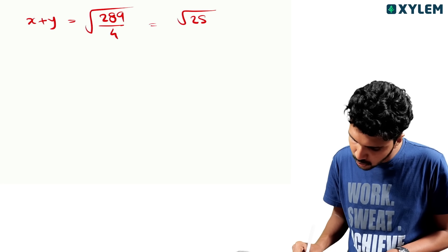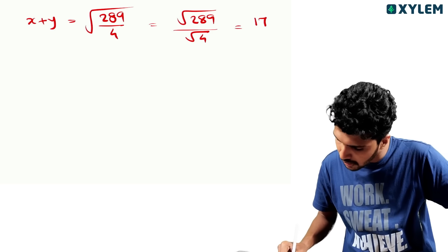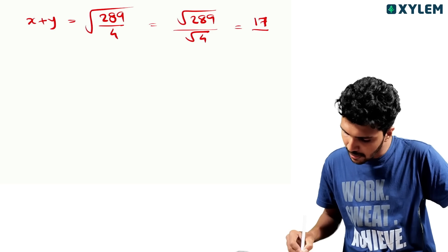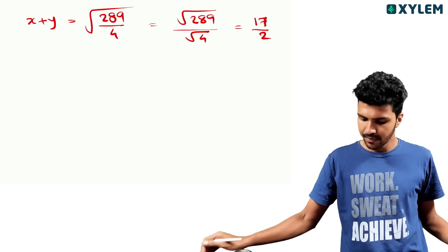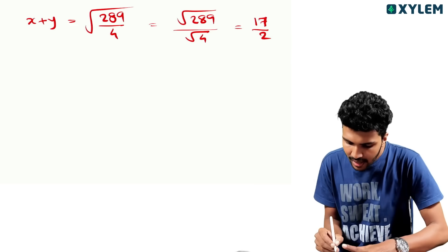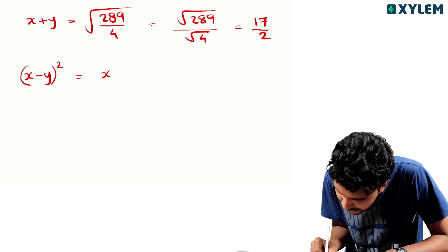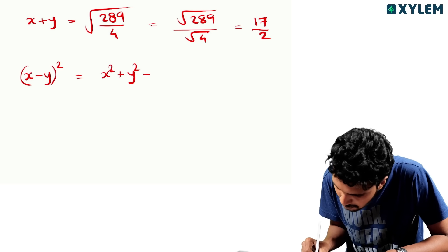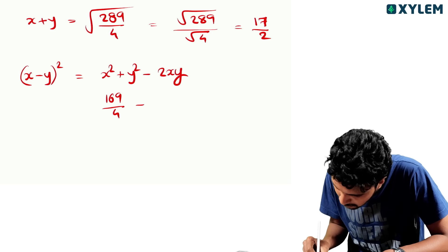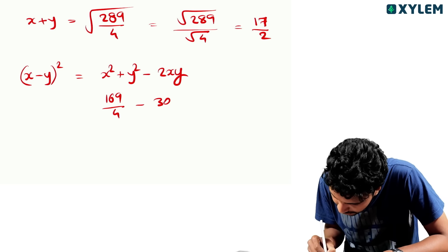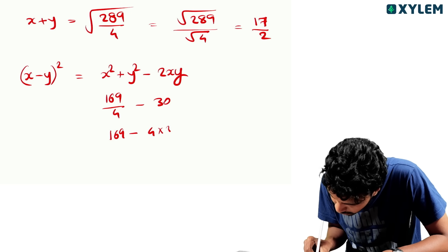That is root 289 by root 4. Now for x minus y: x minus y whole square equals x square plus y square minus 2xy, minus 4 into 30 divided by 4.